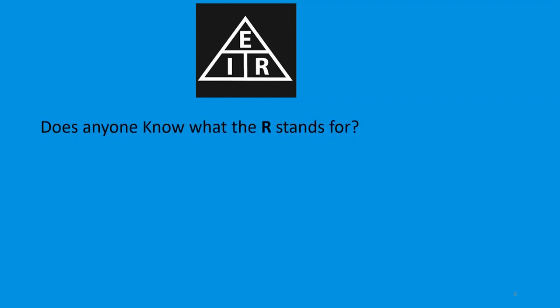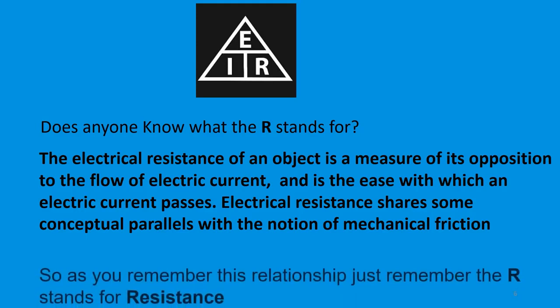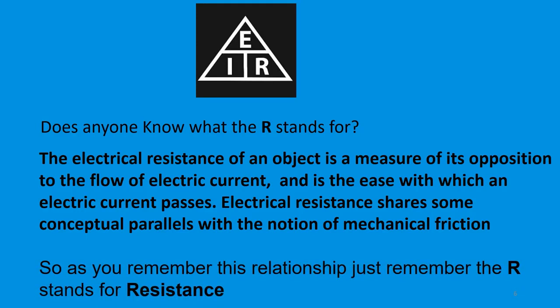Does anyone know what the R stands for? Electrical resistance of an object is a measure of its opposition to the flow of electric current — the ease with which an electric current passes. Electrical resistance shares common conceptual parallels with mechanical friction. So just remember that R stands for resistance.